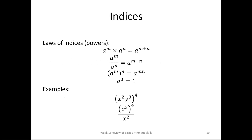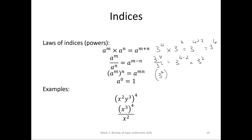Sometimes we use letters instead of numbers, and we'll do more of this in the next topic. Here are just the rules. 3 to the power of 4 times 3 to the power of 2 is 3 to the power of 4 plus 2, which is 3 to the power of 6. 3 to the power of 4 divided by 3 to the power of 2 is 3 to the power of 4 minus 2, which is 3 squared. And 3 to the power of 4 raised to the power of 2 is 3 to the power of 4 times 2, which is 3 to the power of 8.